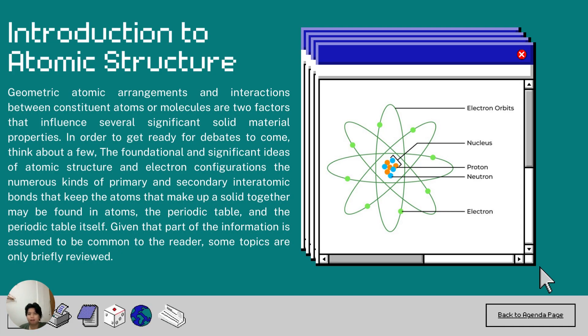For the background, numerous crucial solid material properties are influenced by geometric atomic arrangements and interactions between constituent atoms or molecules. So in order to get ready for debates to come, think about a few foundational and significant ideas of atomic structure and secondary inter-atomic bonds that keep the atoms that make up a solid together.